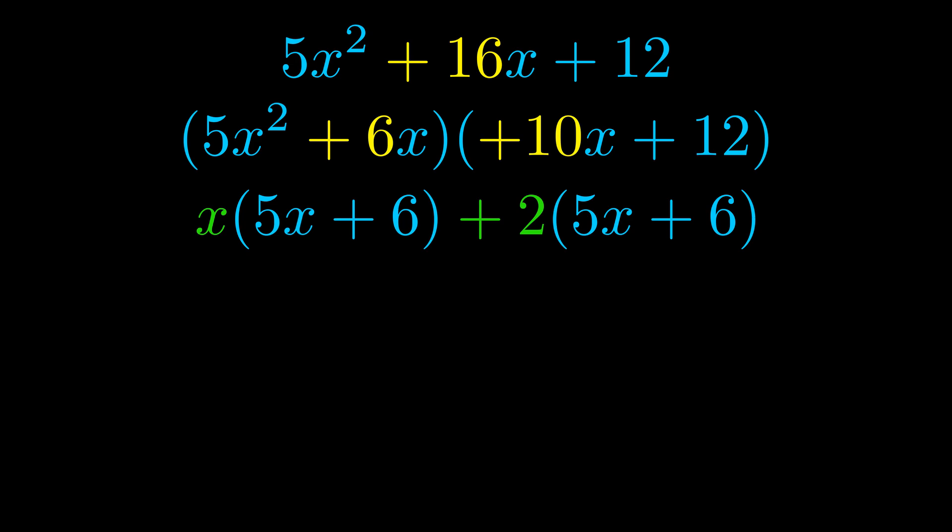Notice also how what remains inside of the parentheses is the same in both cases. The blue values are the same. Those blue values will become one of our factors and we will combine the two green values, the GCFs that we pulled out, to get the other one. And that is our fully factored equation.